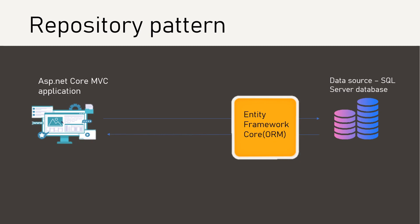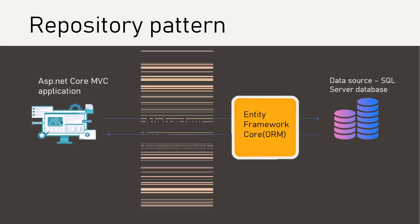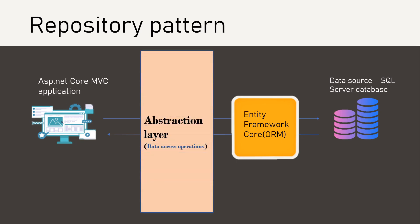Now, we have decided we want to implement the repository pattern. With the repository pattern, we implement an abstraction layer through which we talk to the database. Abstraction layer is a very general term. Specifically, we create an interface which will have all the data access operations. If we want to talk to the database, we implement that interface and use those operations. Let's first implement this pattern in our application and later we can discuss the advantages.